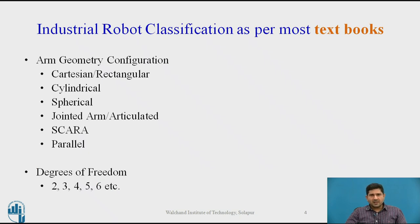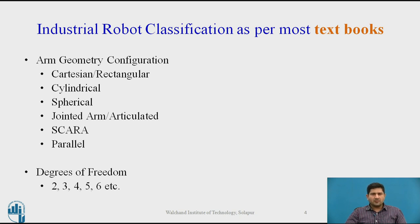Most textbooks now have a variety of classifications, and they classify robots on the basis of arm geometry, which is the most popular and most common configuration, followed by degrees of freedom. Arm geometry configuration is typically Cartesian or rectangular — because that's how the work envelope looks — cylindrical, spherical, jointed arms, SCARA, and parallel. This arm geometry configuration is the one you will find in almost every textbook on industrial robotics.